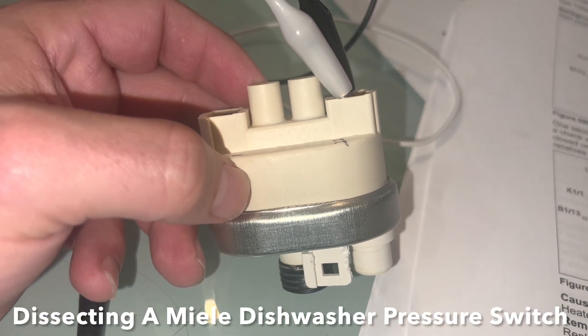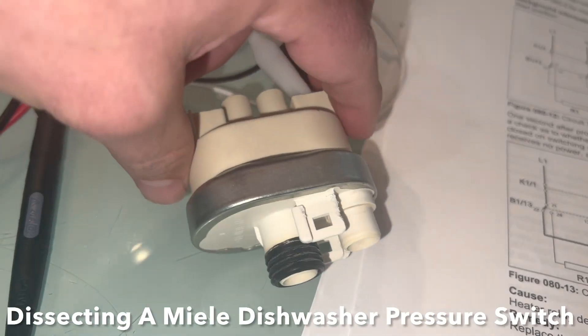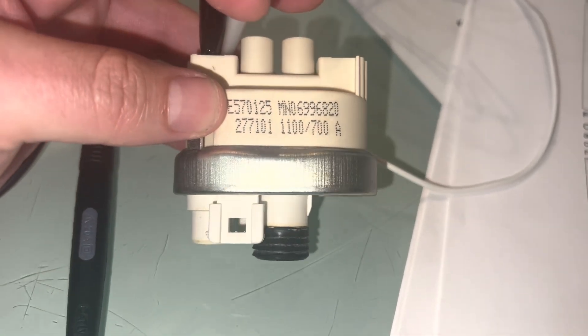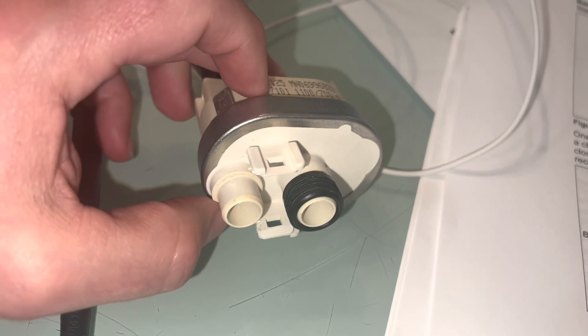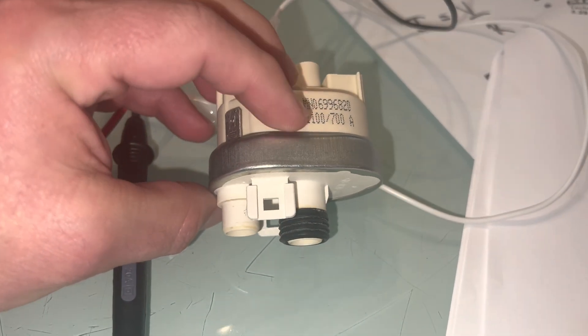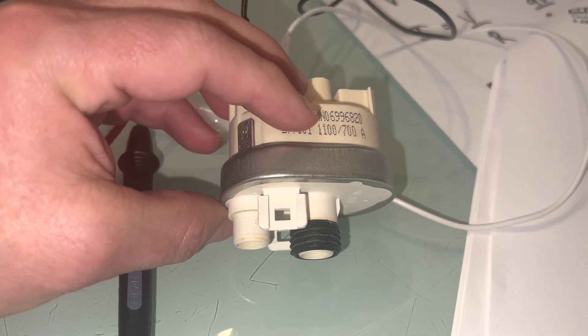I'm continuing to try to understand what went wrong with my pressure switch. What I did is put it in the freezer for about 20 minutes, and I found out that I couldn't depress the diaphragm anymore. So I'm suspecting that there's water or something that froze behind it.